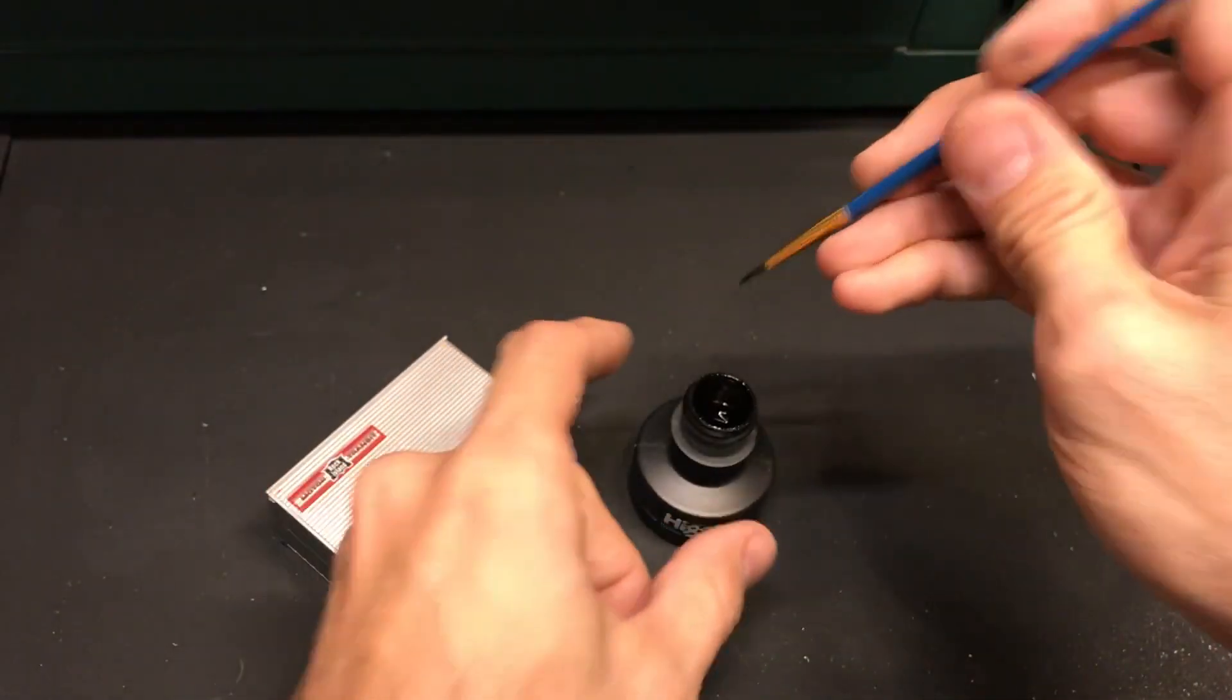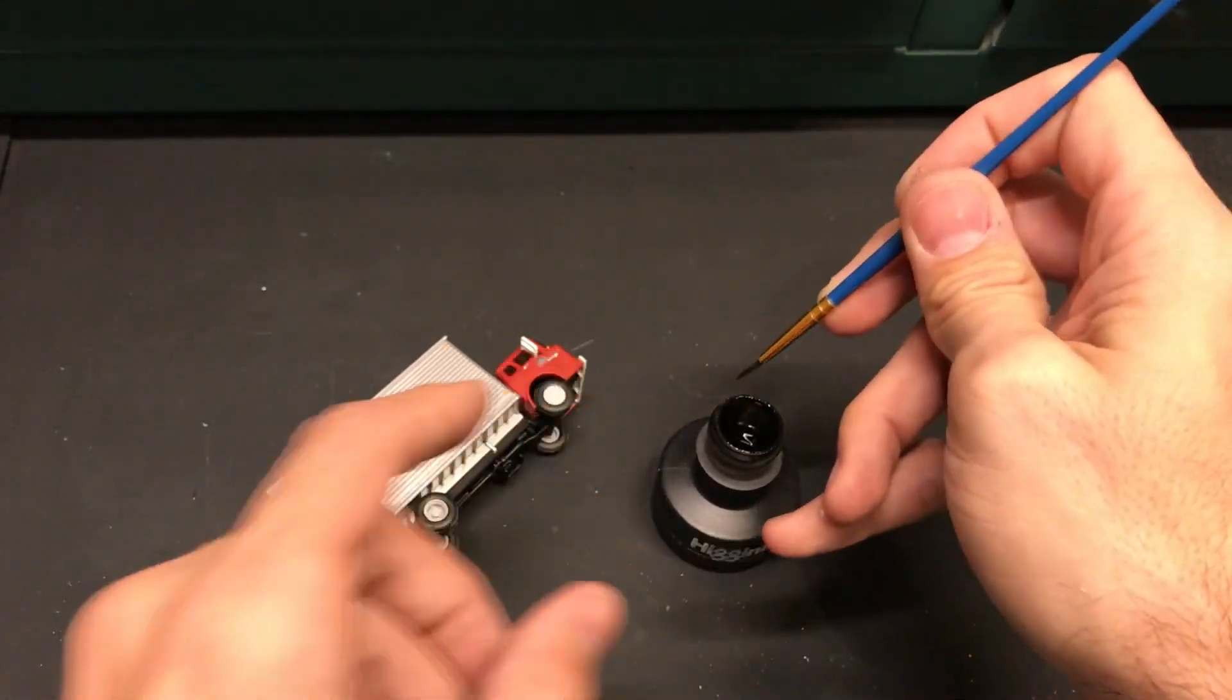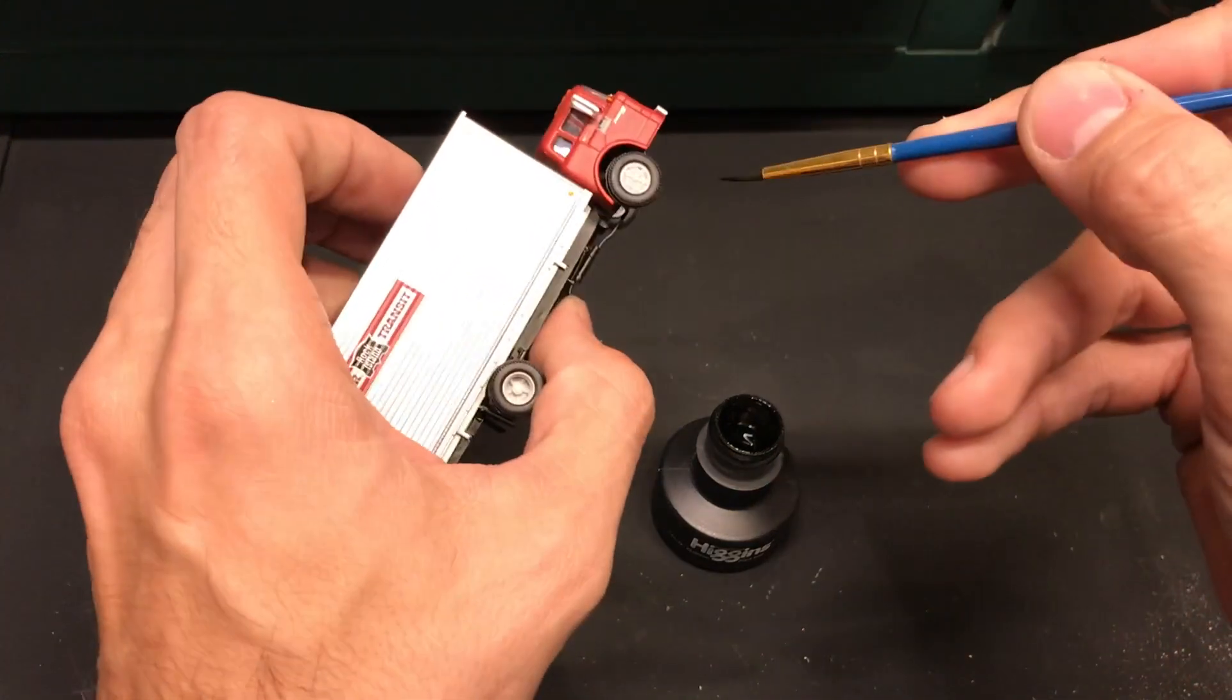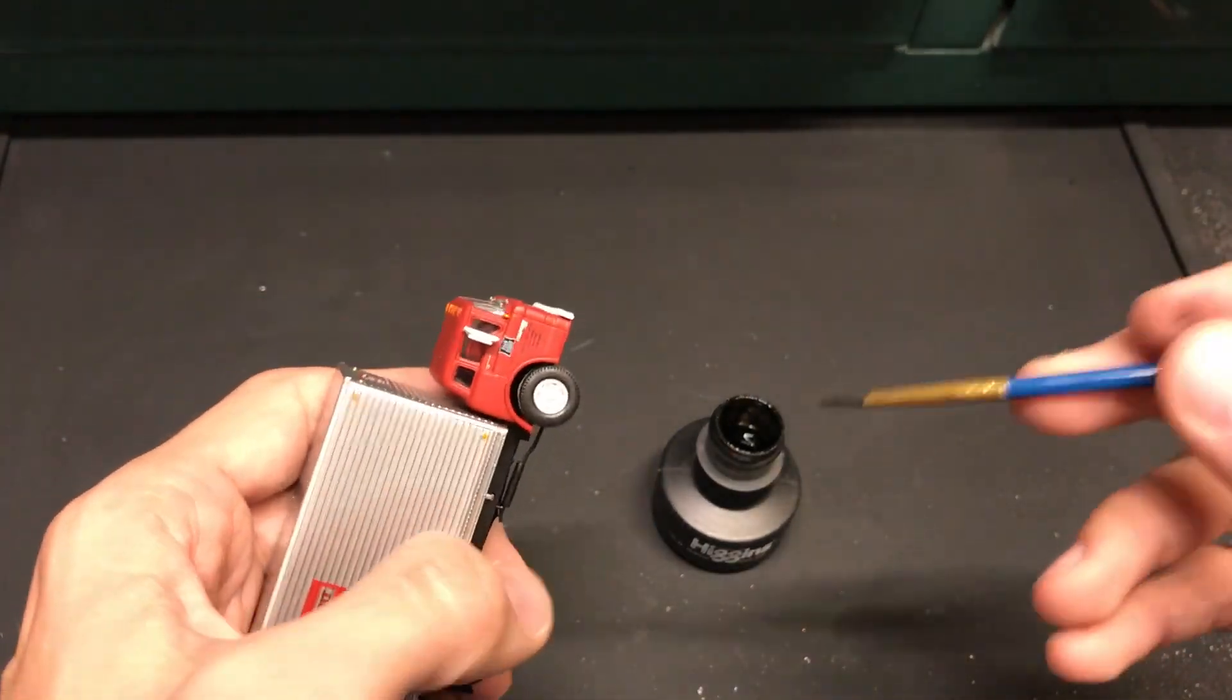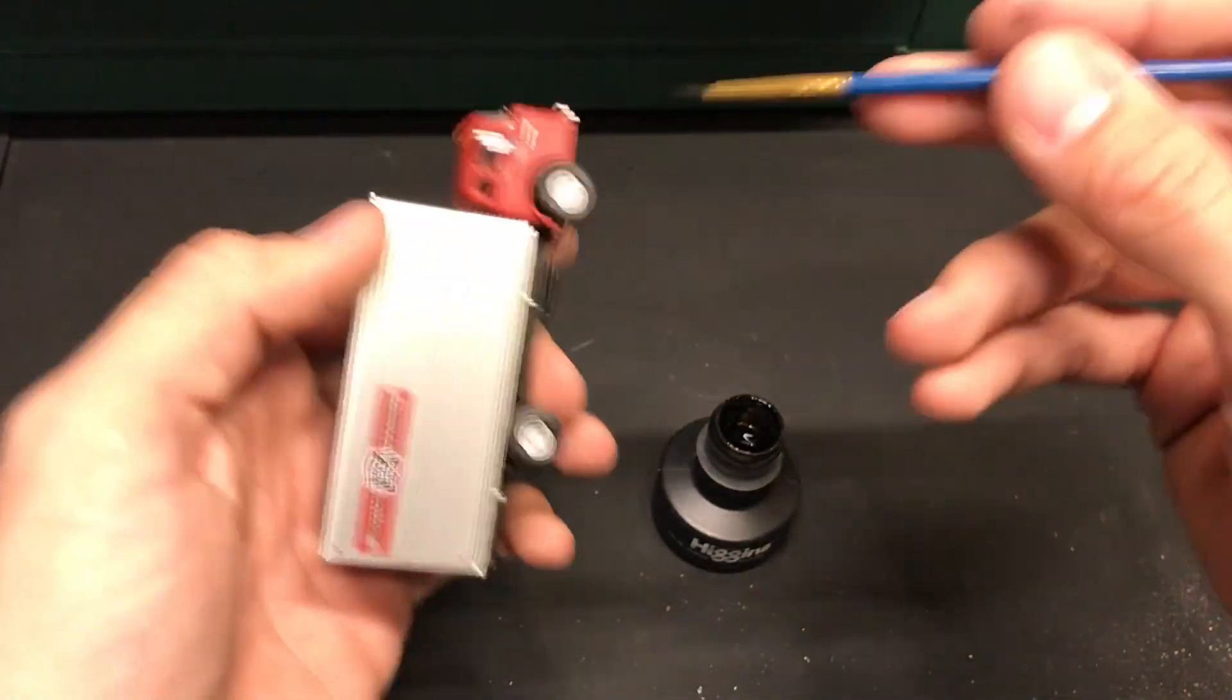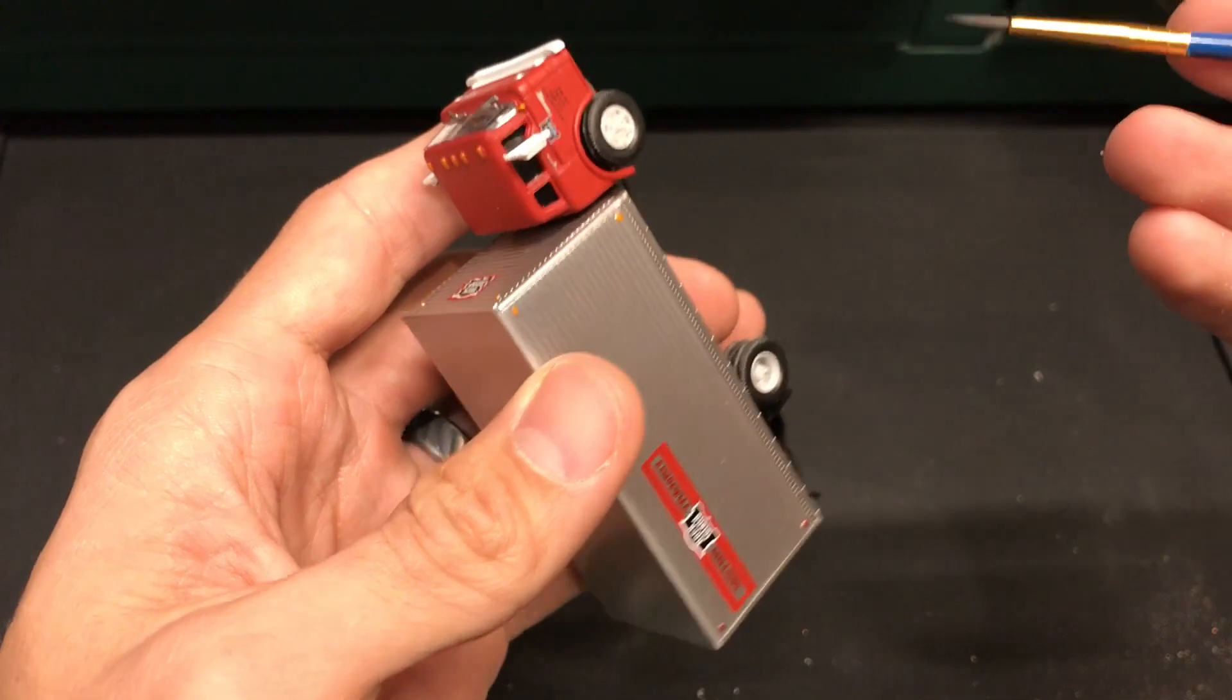So I take the India ink, I just do a little bit on the tip of the brush. This stuff goes a long way. And the nice thing I like about India ink is that if you make a mistake, you really can just dilute it with water and kind of back up the process. And you're not going to be feeling like, well, I put a bunch of paint on there, now I can't get the paint off, I ruined it. This is just a nice way to go about doing it.